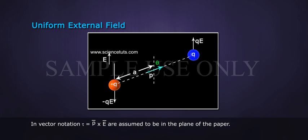In vector notation, Tau equals P bar cross E bar, assumed to be in the plane of the paper.